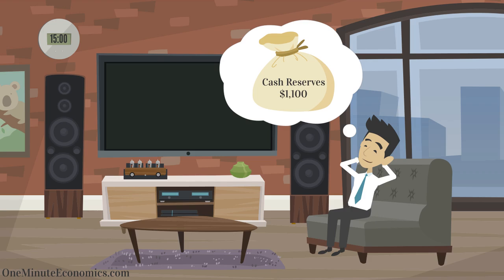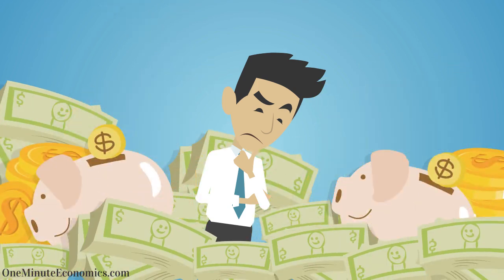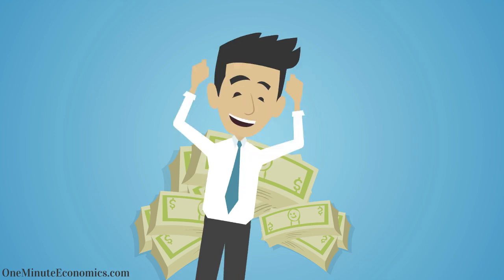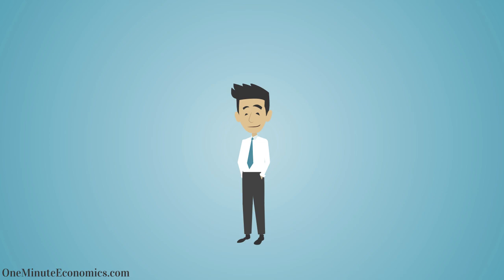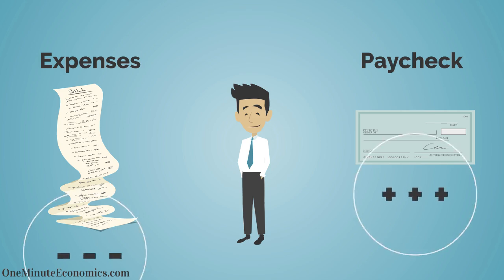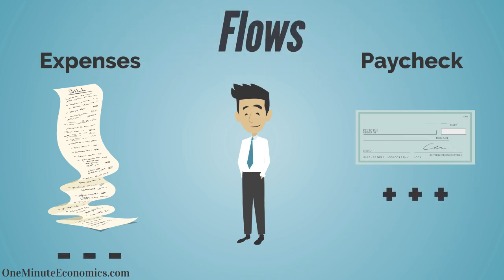To keep things organized: first, his cash reserves are stocks, which can be depleted or accumulate. And second, John's emergency expenses and his monthly paycheck are things that deplete or add to his cash reserves, and we call those things flows — the variables which change stocks.